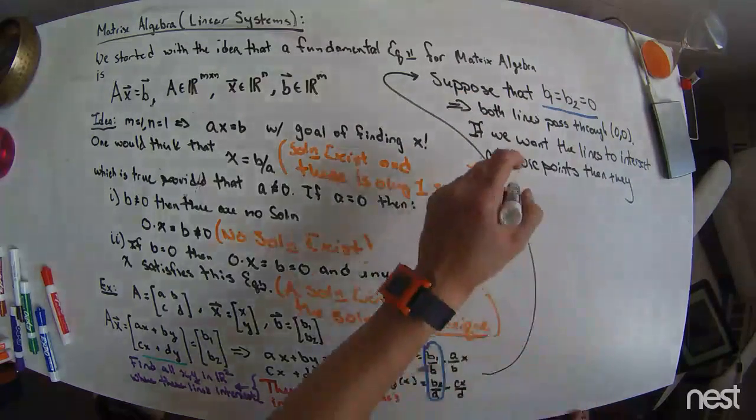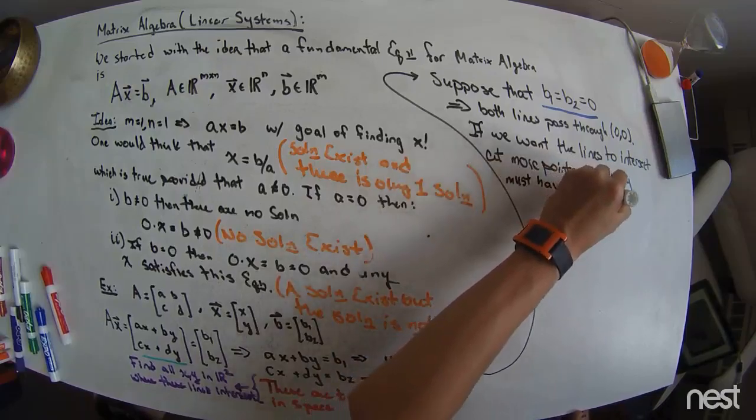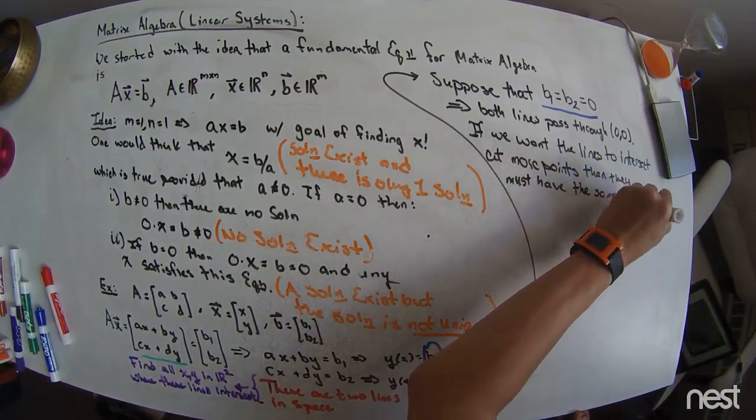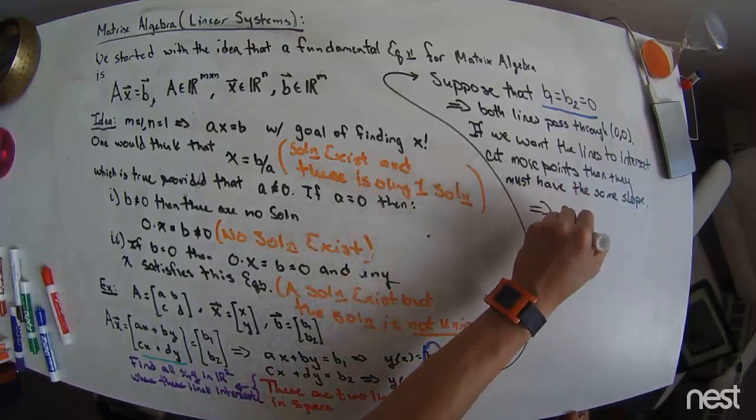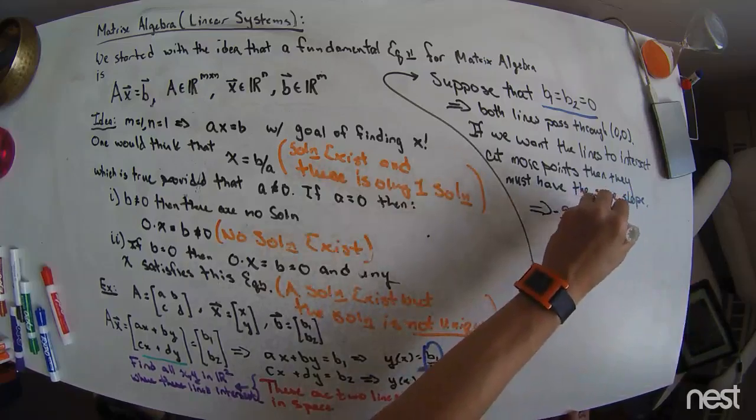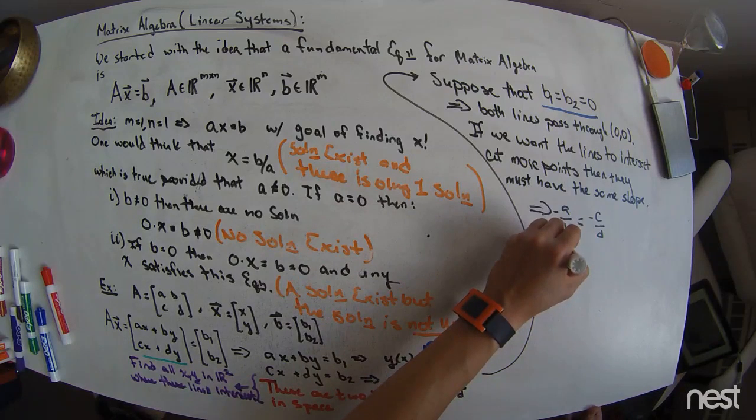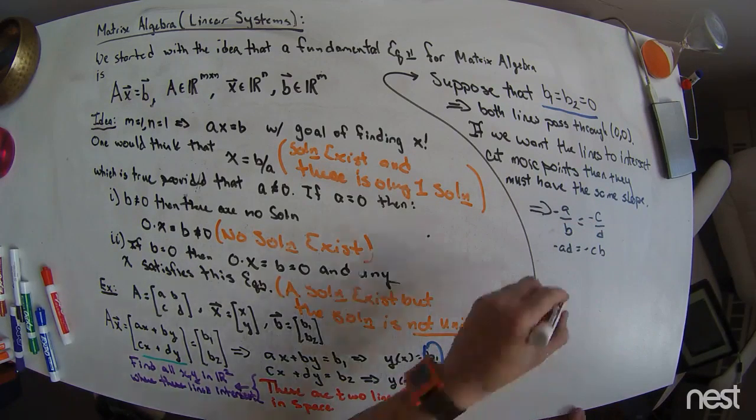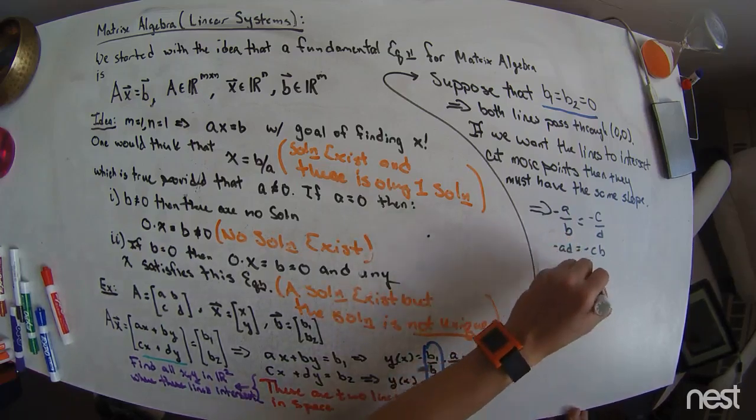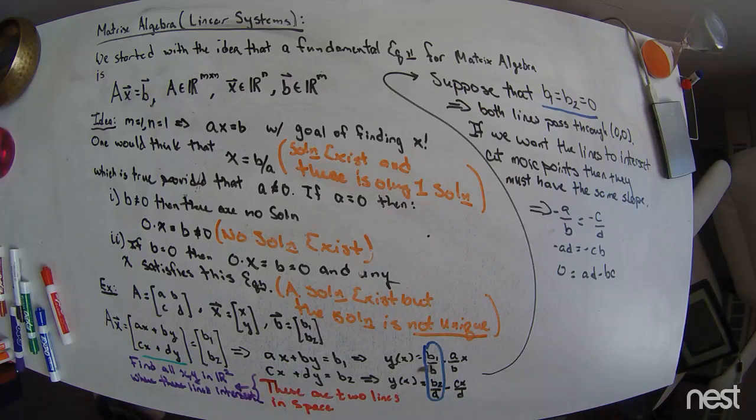So if we want the lines to intersect at more points, then they must have the same slope. So the implication is that -A/B must equal -C/D. Or if I multiply both sides by D and B, I get -AD equals -CB. Or if I move this AD over to the right, I'll have that 0 equals AD minus BC. And that's a known quantity. That is something that we've seen in Calc 3. It's a determinant calculation. And that is the determinant of the A matrix.